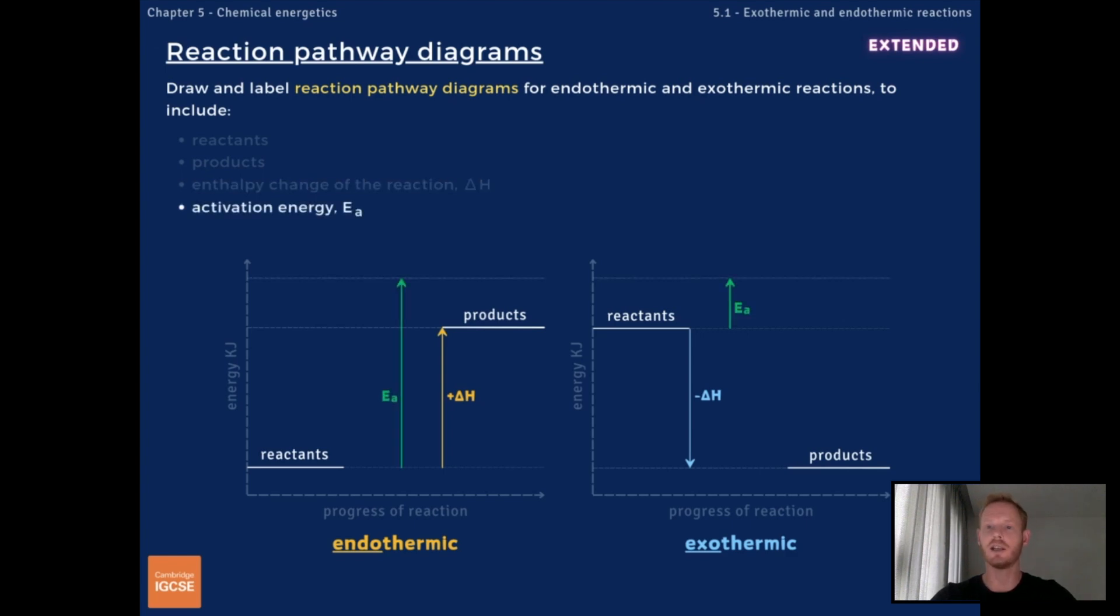Because activation energy is always positive, the arrow always points upwards. Finally, add a curve to the diagram to show the transfer of energy as the reaction progresses.